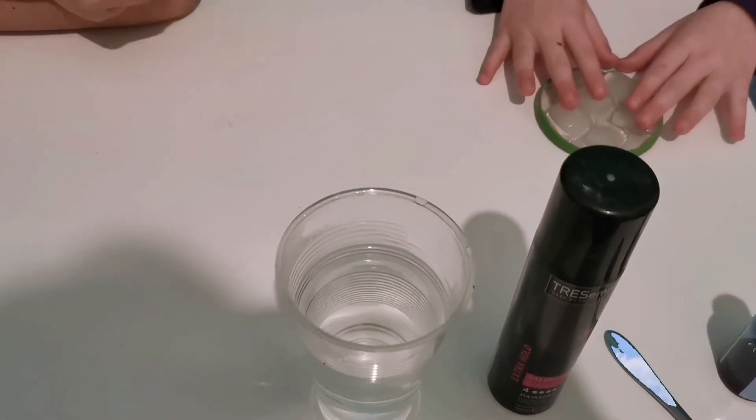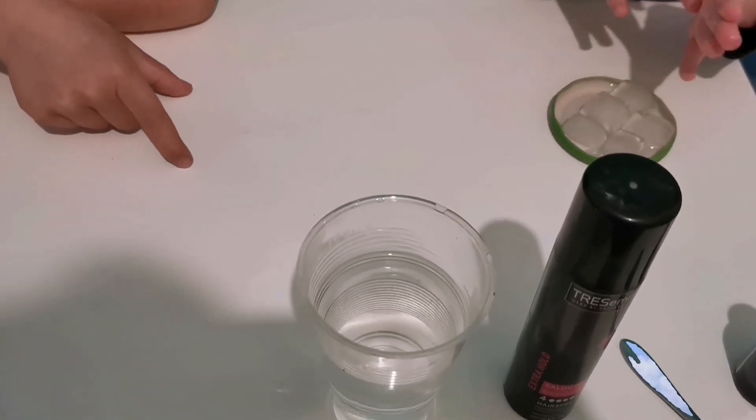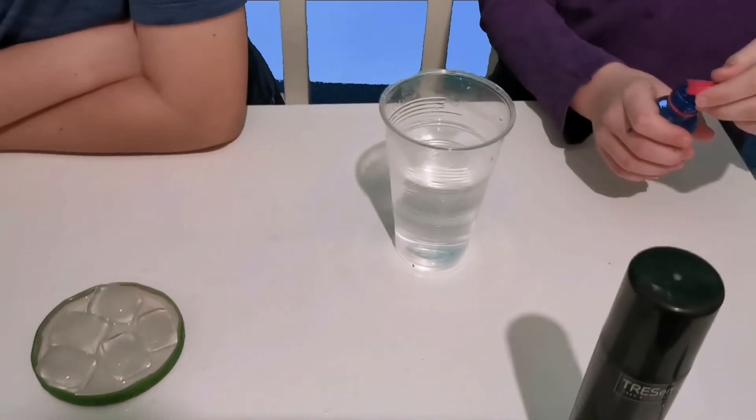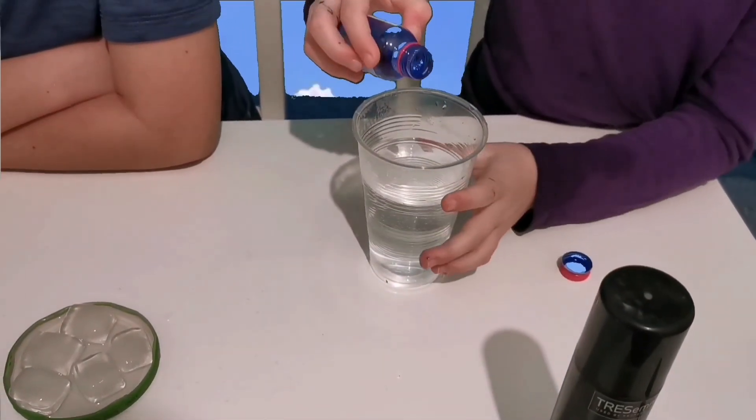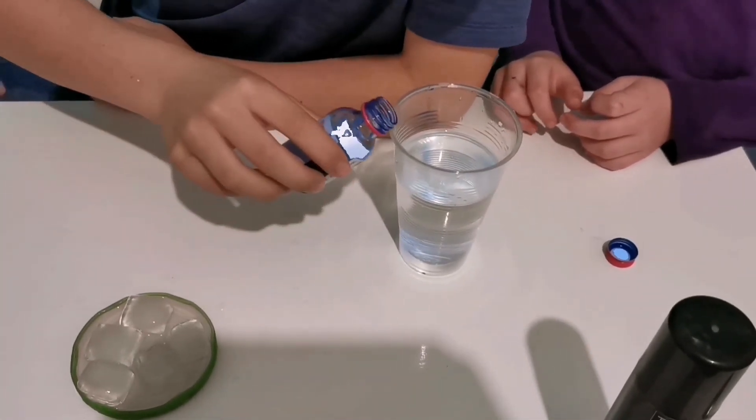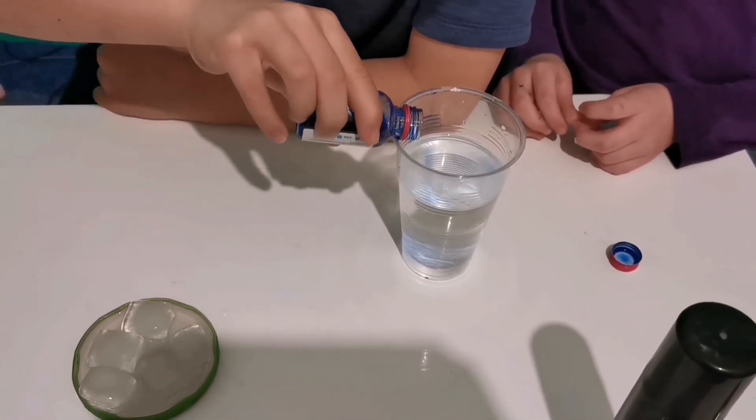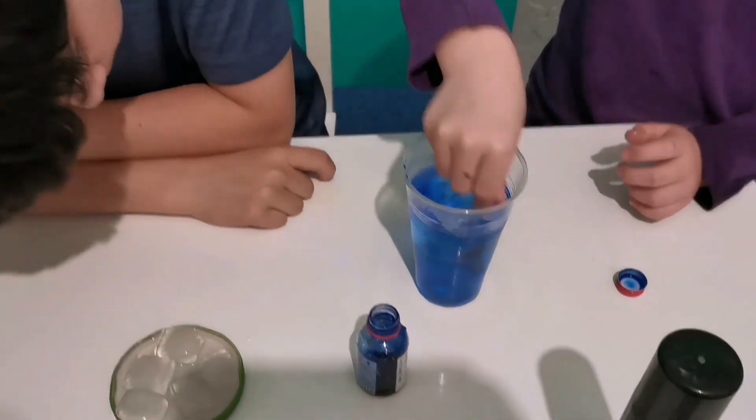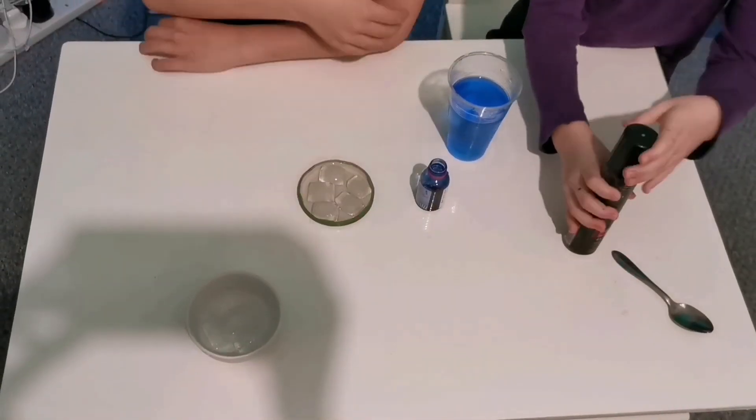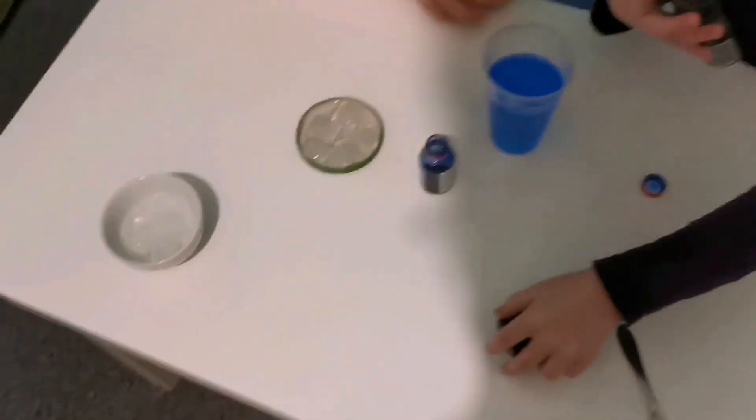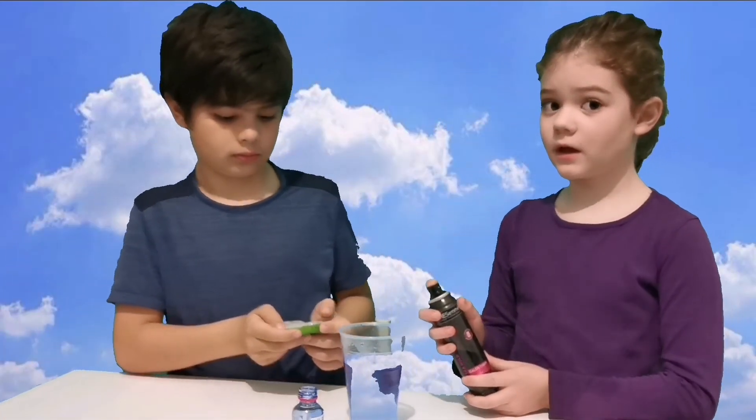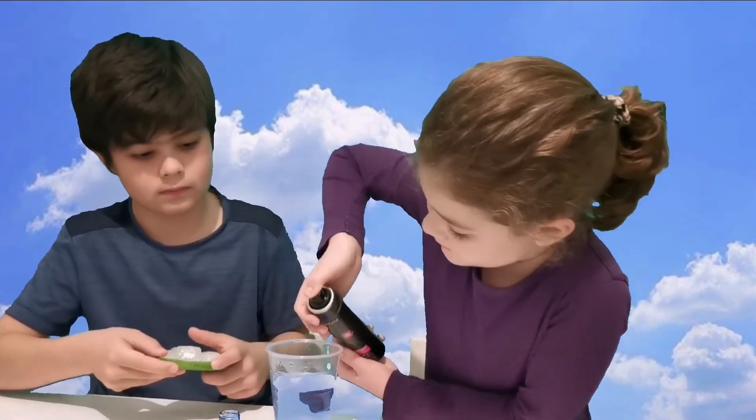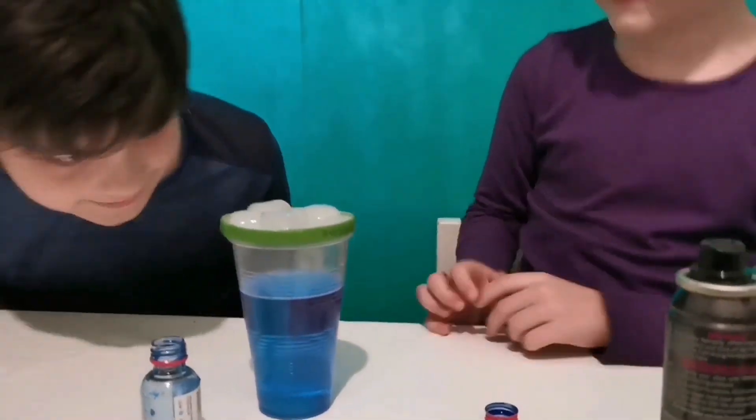First we need to put the ice cubes in a lid because that represents the cold air in the atmosphere. Then, put some blue food colouring so you can see the cloud when it falls. Now we mix it. Now we have to spray a little bit of the hairspray. This process will have to be very quick. I'm going to do the hairspray and Thomas will put the lid. Now let's see the clouds form.